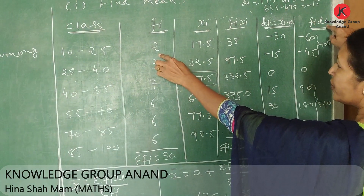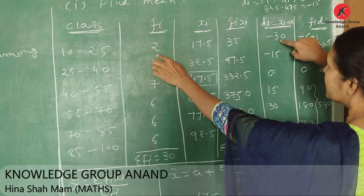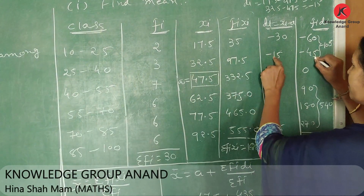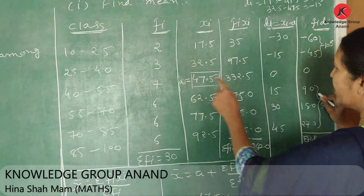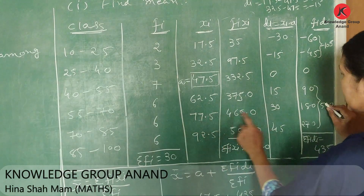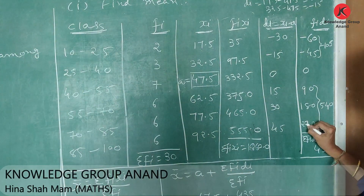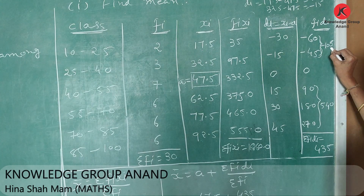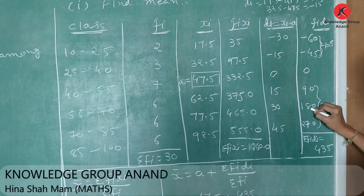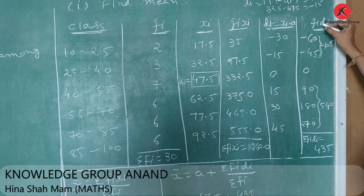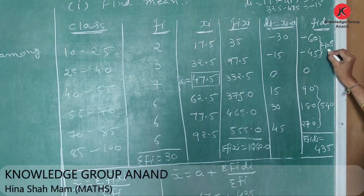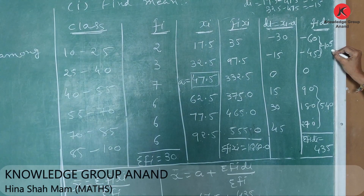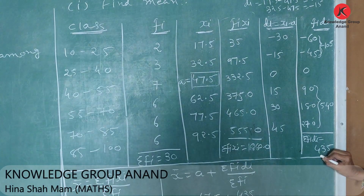Now we compute fi·di. 2 times minus 30 equals minus 60. 3 times minus 15 equals minus 45. 7 times 0 equals 0. 6 times 15 equals 90. 6 times 30 equals 180. And 6 times 45 equals 270. Summing the negative numbers: minus 60 minus 45 equals minus 105. Summing the positive numbers: 90 plus 180 plus 270 equals 540. Therefore sigma fi·di equals 540 minus 105 equals 435.